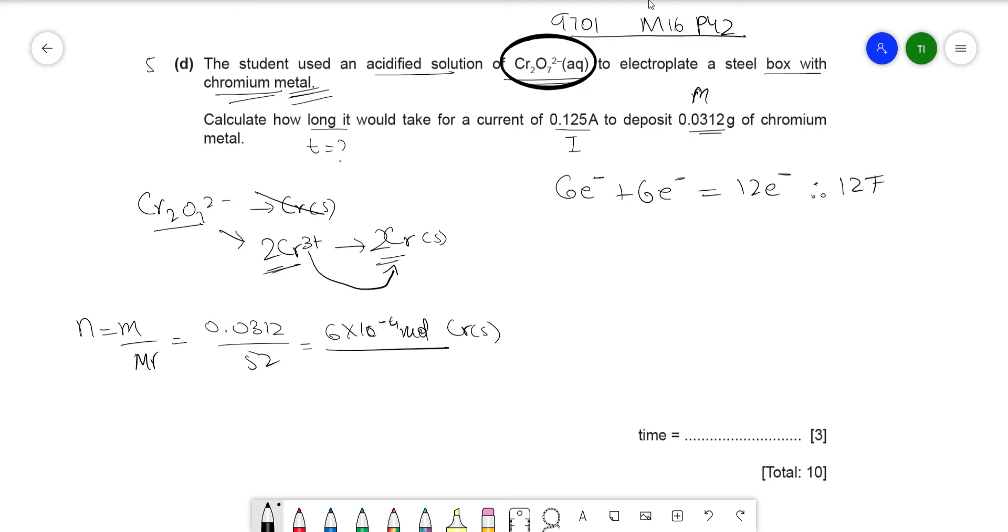So in total, there's 12 electrons that are used up, and therefore you use 12 Faraday's constant. So the proportionality equation will be 12 Faraday's is to two. Normally we'd go for one, but over here two is formed, so two Cr atoms. And we don't know the charge because we haven't been given the time. So the charge is proportional to the moles of Cr that's formed, so 6 × 10⁻⁴.